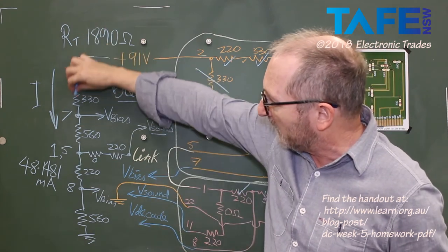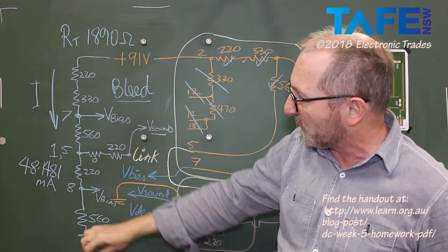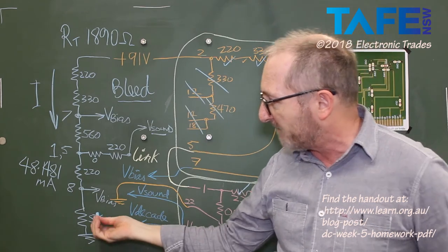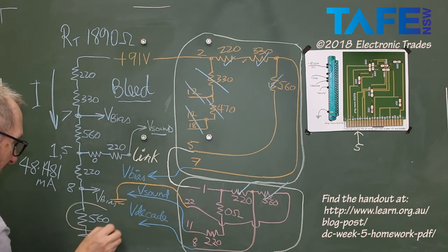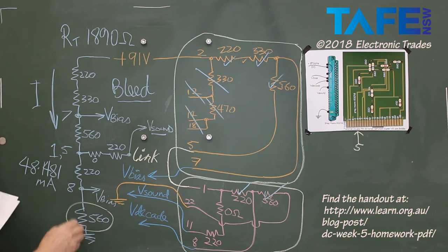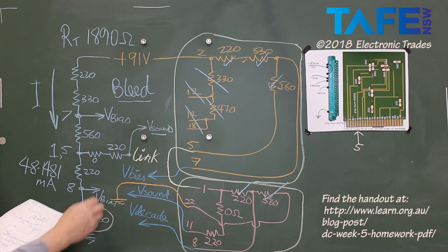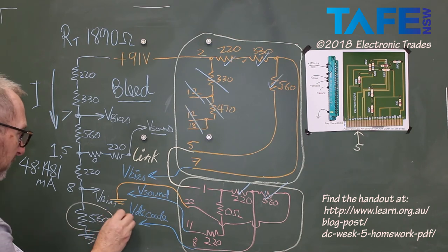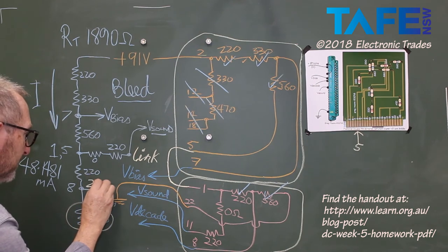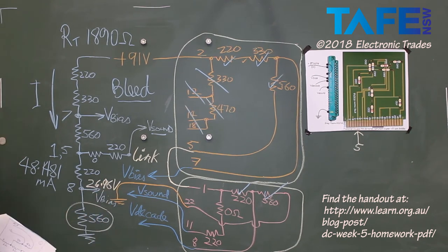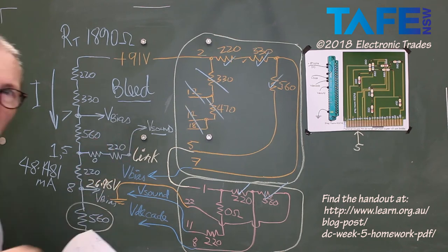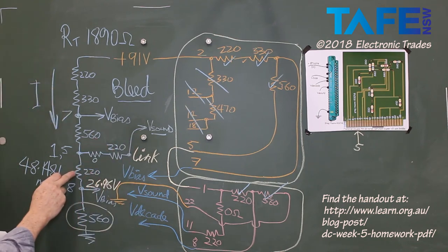Then once we know the current coming down through our bleed resistance, all we have to do is multiply it by that 560 ohms and that'll give us the voltage across the 560 ohms. And that of course is called V-bias. So 48.1481 milliamps multiplied by 560 to give me the V-bias of 26.96 volts. 26.96 volts.